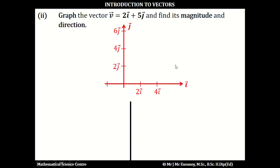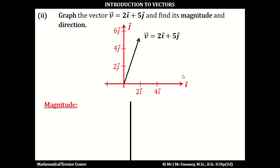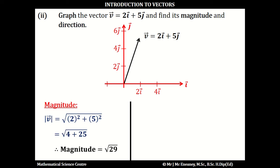In question 2, we're going to graph the vector v, which is 2i plus 5j, and find its magnitude and direction. So if we go across to 2 and then up to 5, this is the vector v, which is 2i plus 5j. If we want to get the magnitude using Pythagoras' theorem, it's going to be the square root of 2 squared plus 5 squared. This works out as the square root of 4 plus 25, and this is the square root of 29.